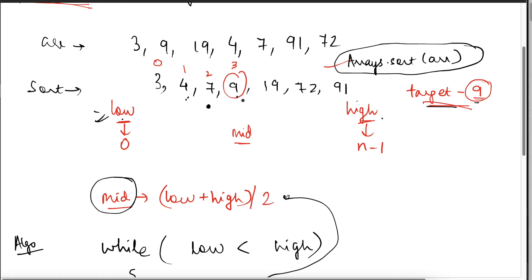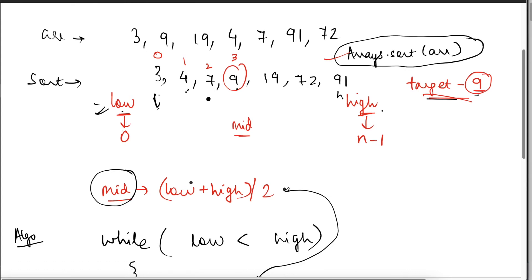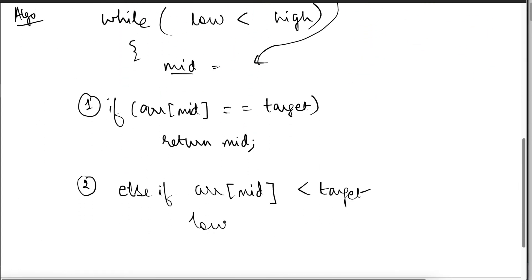What should I ideally be doing? Should I try to search for this element in this half, in the initial half or should I try to search it in this half? I should try to search it in the other half. So if my low is let's say at 3 and high is over here, I don't need my low to be here. I need to move the low a bit ahead.